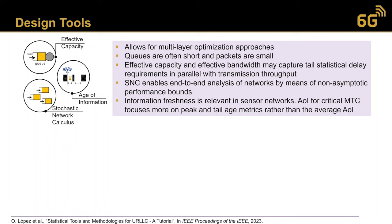Traffic queues in critical MTC are often short with only occasional bursts of short packets, so effective capacity, effective bandwidth, and stochastic network calculus may be used in conjunction with the previously mentioned tools. For age of information, rather than traditional average AoI, the focus must be on peak and tail age metrics, for which again we can use inequality bounds, distribution bounds, and the EVT framework.